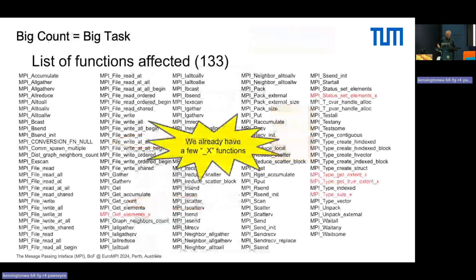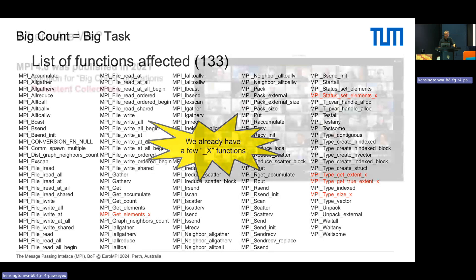This is consistent through the whole standard, and the bindings are now automatically generated, so this will also apply to future additions. The side effect was 133 more functions added, since all operations with a count argument were replicated. This doesn't mean the standard is much more complicated — it's all auto-generated and wrapped. The big count feature solves a big problem for the community and is implemented by basically all modern MPI implementations.